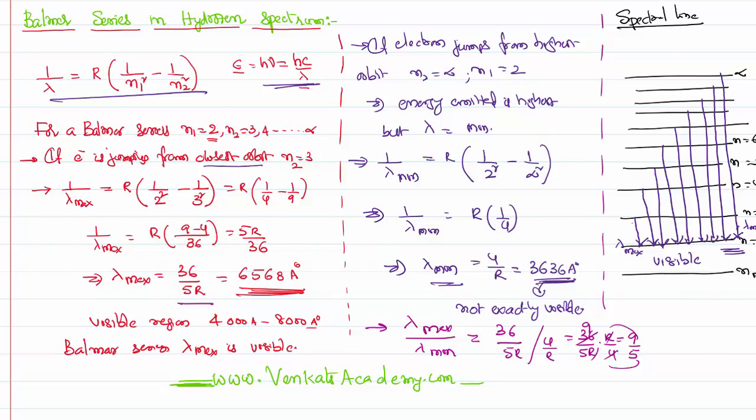But of course some of these minimum lines may not be visible that falls just before the visible region, that is the ultraviolet region itself. This is all about the Balmer series of hydrogen spectrum. Thank you for watching, keep coming back for more due diligence, thank you.